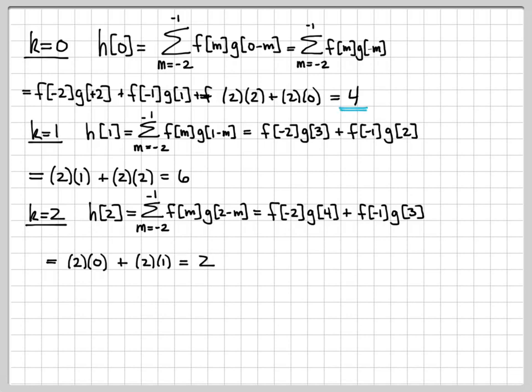So I now know that at time 0, h is equal to 4. At time 1, h is equal to 6. And at time 2, h is equal to 2. And zero everywhere else. So if I wanted to, I could go ahead and plot h. Here's the time axis. It's zero everywhere except at 0, it's equal to 4. At 1, it's equal to 6. At 2, it's equal to 2. And then zero everywhere else.